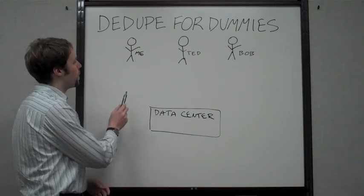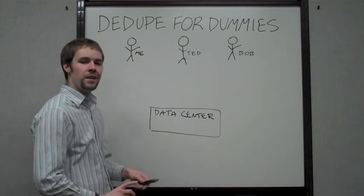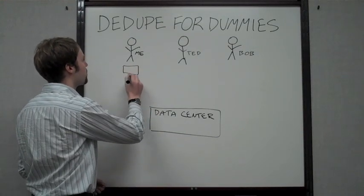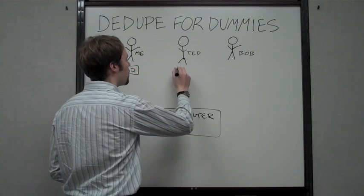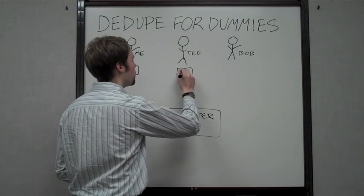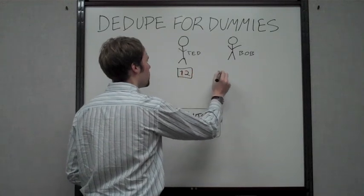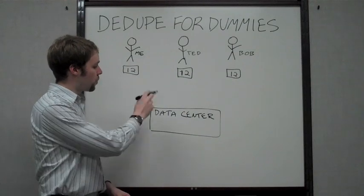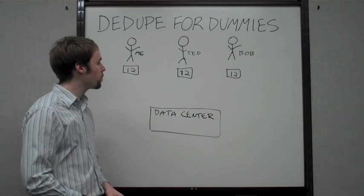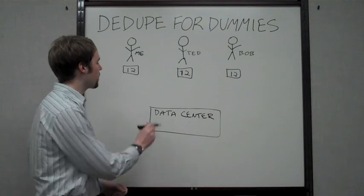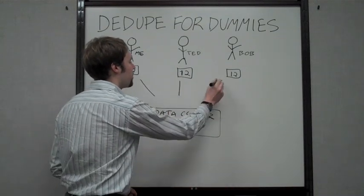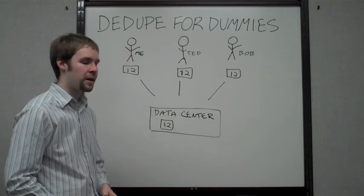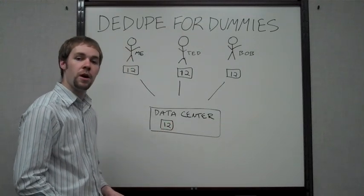Right here you've got three people: me, Ted, and Bob. Let's say we've all got the same file, maybe it's a music file. Call it 1-2. When you want to protect that with your online backup product, it goes to the data center, and that product should recognize that everybody's got the same file, and it will only protect one version of it. That way it's faster and it's much more efficient on your bandwidth.